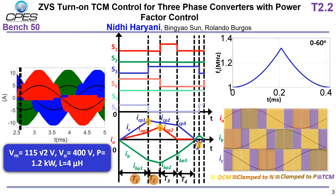We can see in the full line cycle control that the control rotates after every 30 degrees. You can also see that the switching frequency variation is very small for my proposed control. Also, all three phases are running at the same switching frequency at the same time.